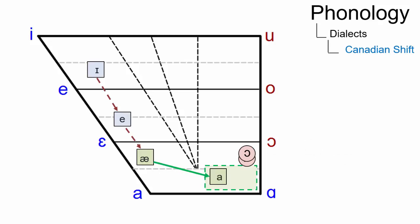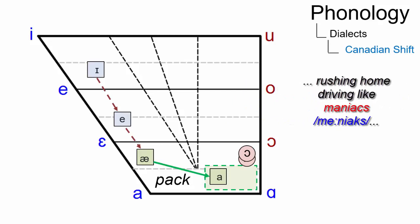Examples can be found in words like pack where we can see a lowering and retraction to æ, resulting in pack. Just listen: I usually spoke about half a pack. Rushing home, driving like maniacs.